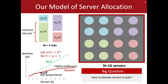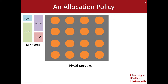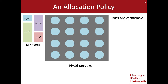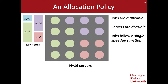In light of these realistic speedup functions, how should we be allocating servers to jobs? We'll define an allocation policy, which determines at every moment in time how many servers are allocated to each job. For example, our allocation policy might allocate all 16 servers to the blue job. Jobs are assumed to be malleable, which means they can change the number of servers they use over time. We'll also assume that servers are divisible, meaning jobs can receive fractional allocations, and that all jobs follow a single speedup function.